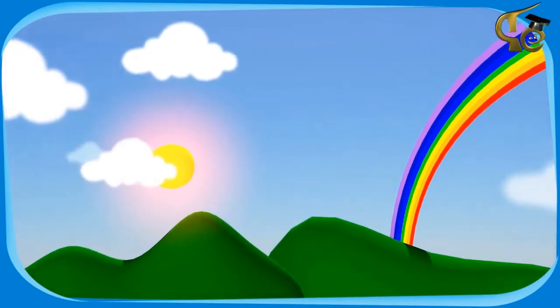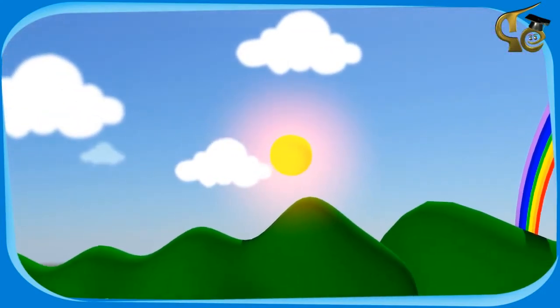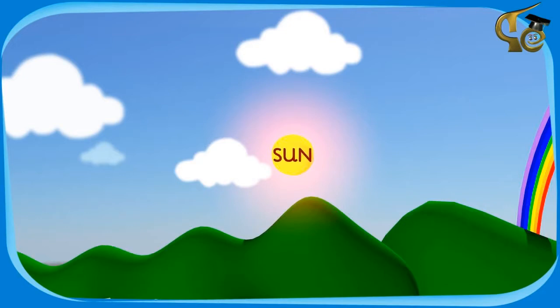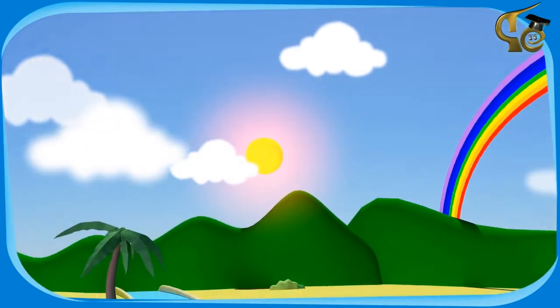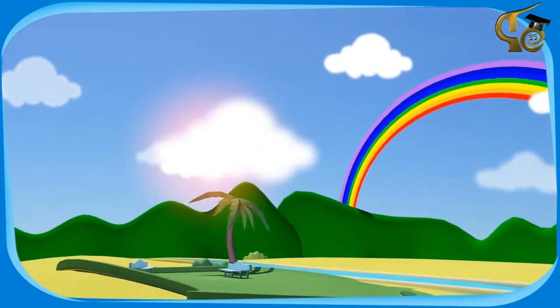We can see different things in the sky, such as the sun, the clouds, and the rainbow.